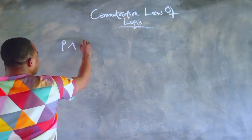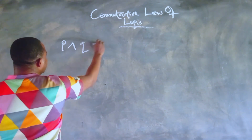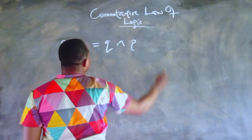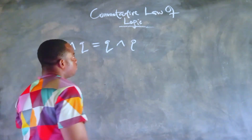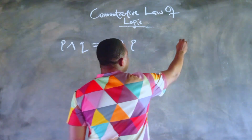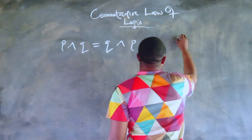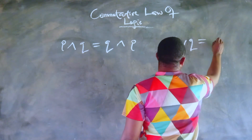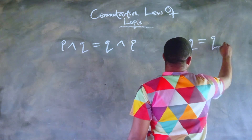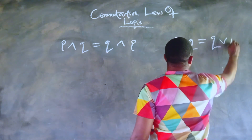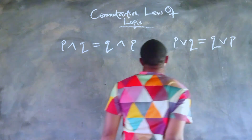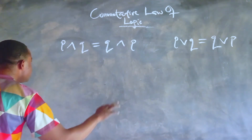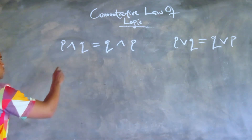The commutative law of logical reasoning is comprised of two major parts. The first part states that P and Q is equal to Q and P. And the second part states P or Q is equal to Q or P.